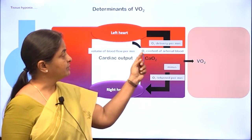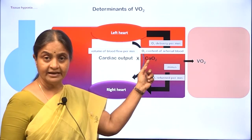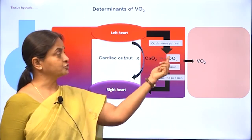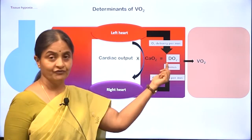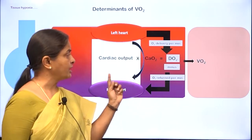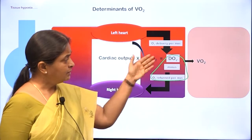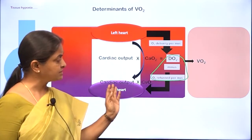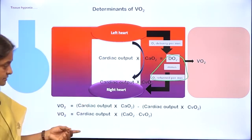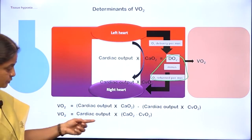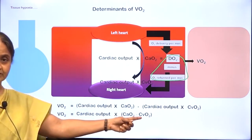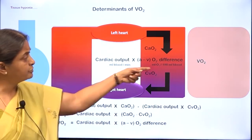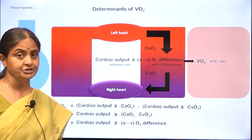Oxygen delivery per minute is arterial oxygen content — CaO2 — multiplied by cardiac output. These two terms together yield DO2, the notation some books use for oxygen delivery. Oxygen delivered minus oxygen returned gives oxygen consumed, where oxygen returned per minute is cardiac output multiplied by venous oxygen content — CvO2. So the equation is: VO2 equals cardiac output times the difference between arterial and venous oxygen content, called the AV oxygen difference.